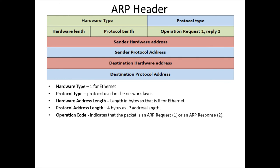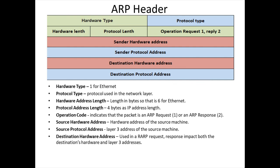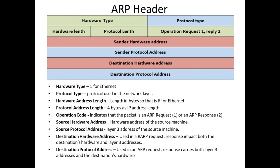The operation code indicates whether the packet is an ARP request or ARP reply — determined by the value 1 or 2. The sender hardware address is the MAC address of the source machine. The sender protocol address is the IP address of the source machine. The destination hardware address is generally used in reverse ARP requests. The destination protocol address is used in ARP requests to identify the destination IP, and the response carries both the layer 3 address and the destination hardware address.